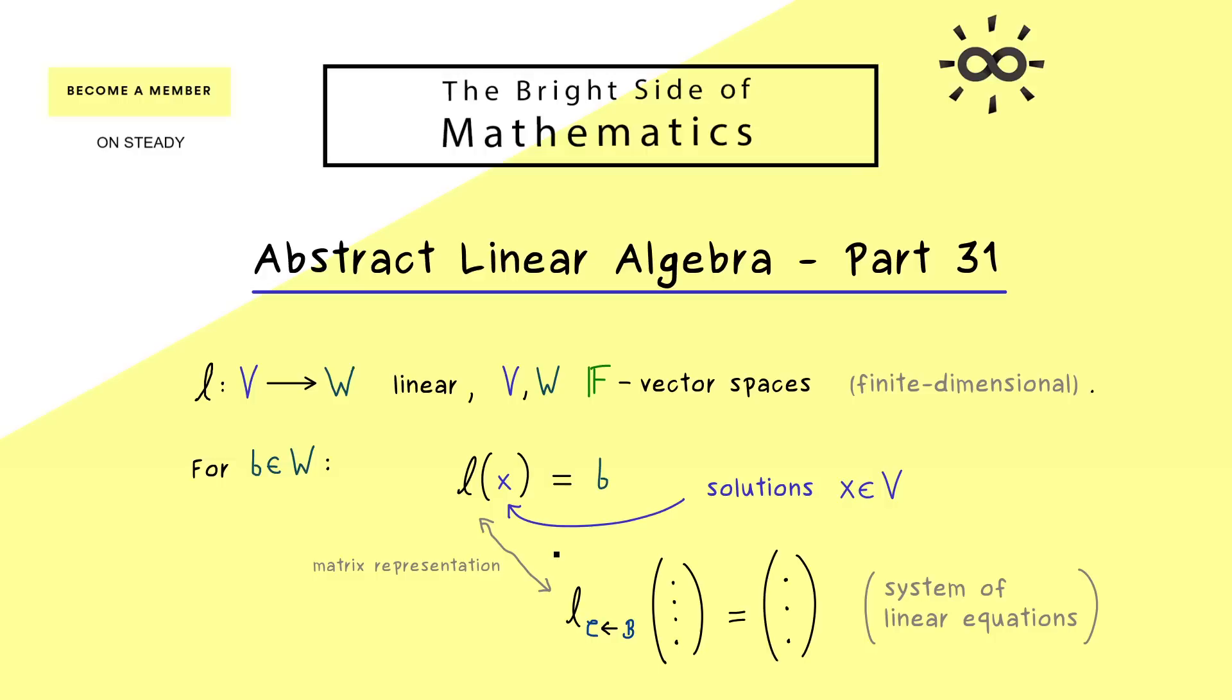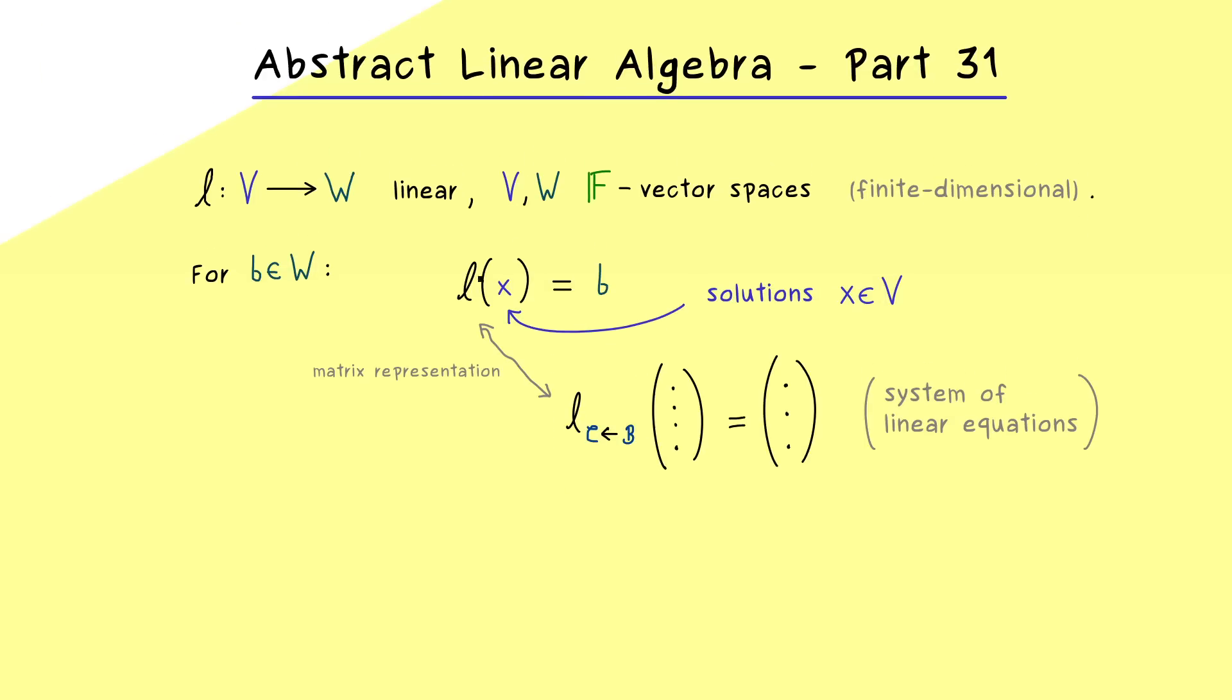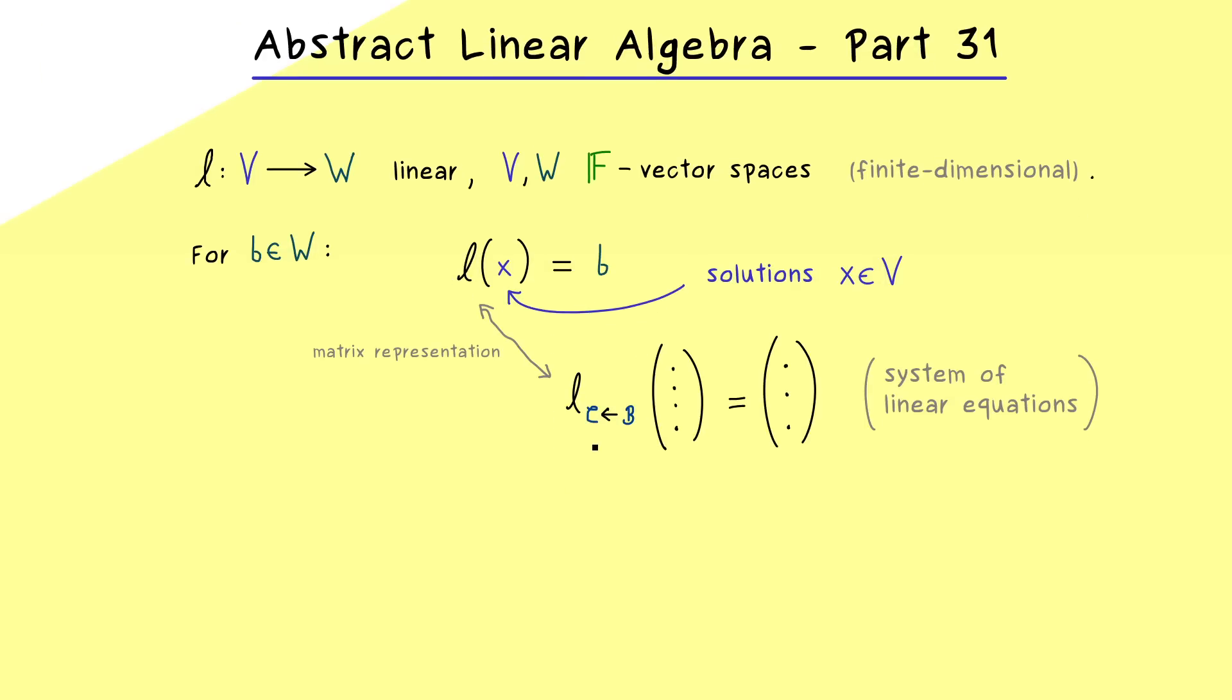However, depending on your application it's not always needed to solve the whole system explicitly. For example, sometimes it's good enough to just know about uniqueness and existence of solutions. Since all the information of the system is already inside our linear map l, we might not have to do this translation at all. Therefore, we just have to generalize some definitions.